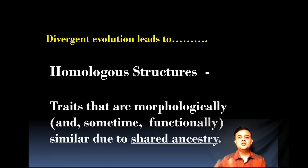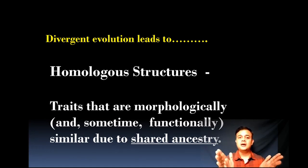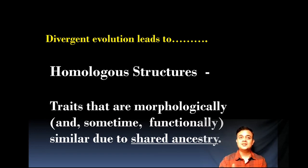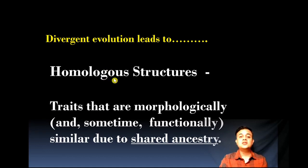Divergent evolution or speciation leads to homologous structures. Homologous structures are traits that are morphologically and sometimes functionally similar due to shared ancestry. They are structures separated by a speciation event. Whenever you hear the term homologous, shared ancestry should come to your mind, because homologous structures are the result of divergent evolution or speciation.